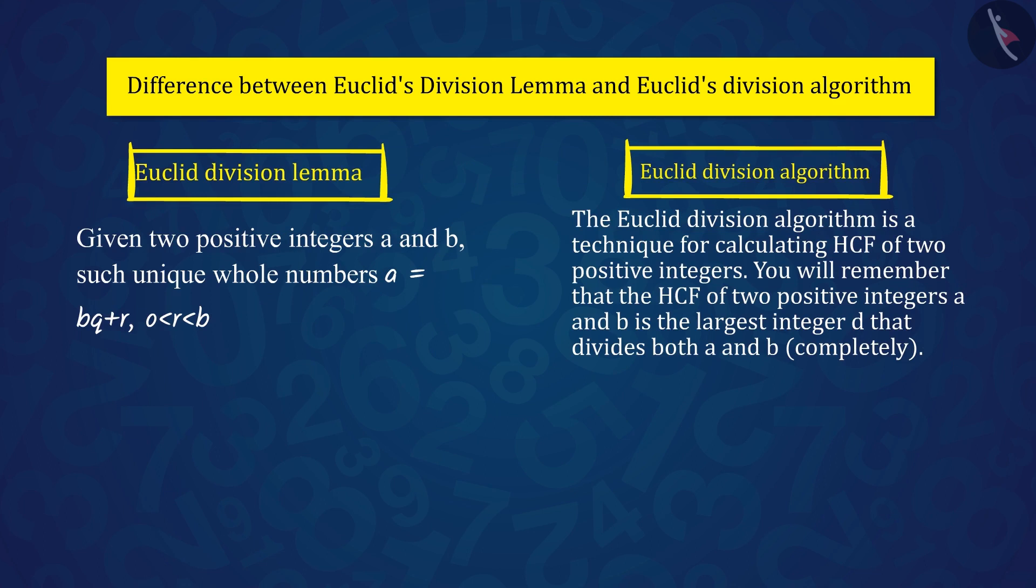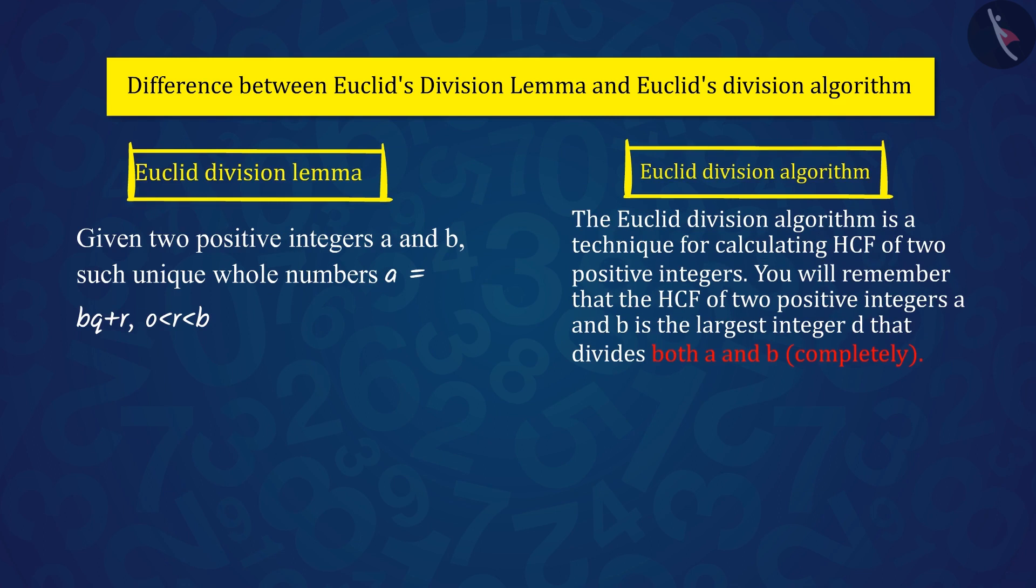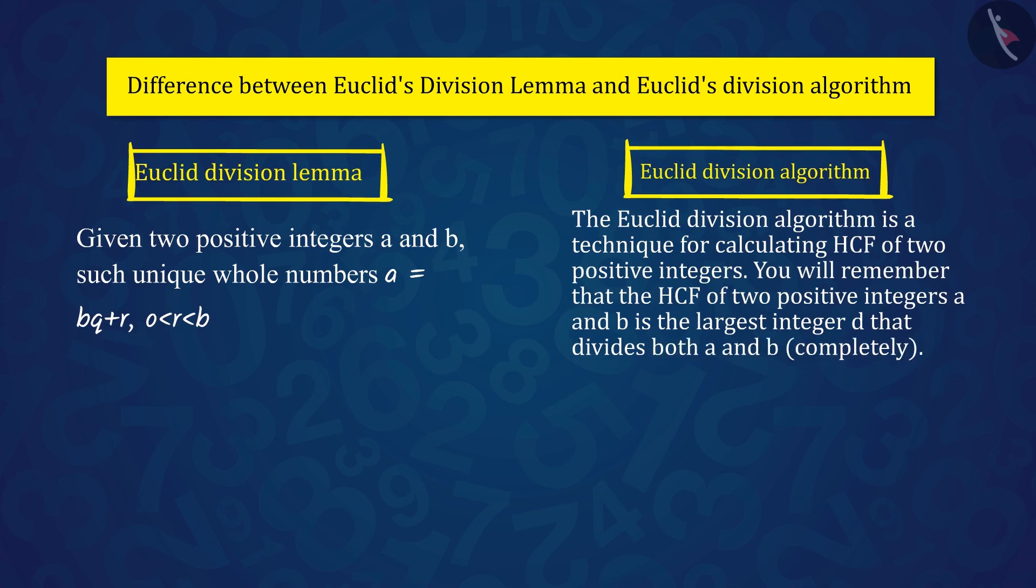While algorithm is a series of well-defined steps which is used to find the HCF of two positive integers a and b, where we can use the statement a equals b multiplied by q plus r of Euclid's division lemma.